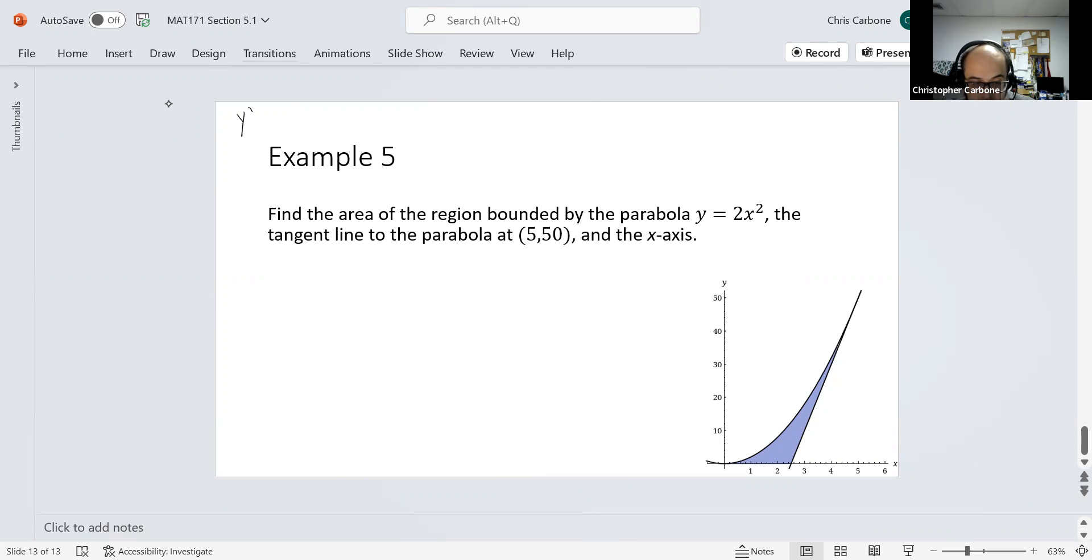For the slope of that, we take the derivative of y, which is 4x. Plug in 5, that will be y prime of 5, that will be 4 times 5, or 20. To get the actual equation, that's y minus 50 equals 20 times x minus 5. Solving that, we should get an equation of y equals 20x minus 50.